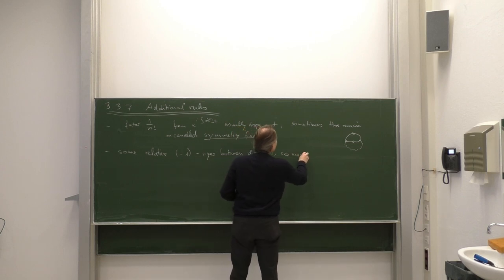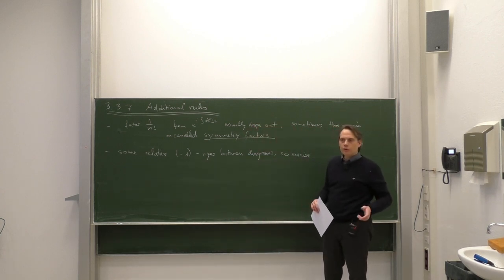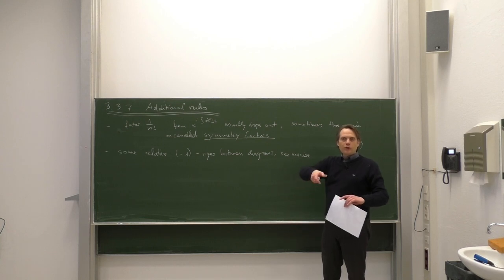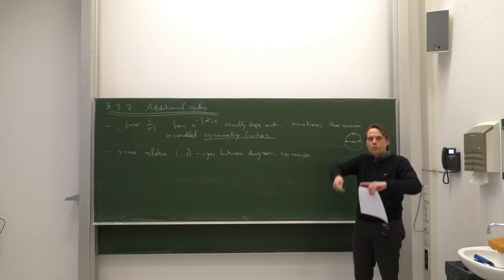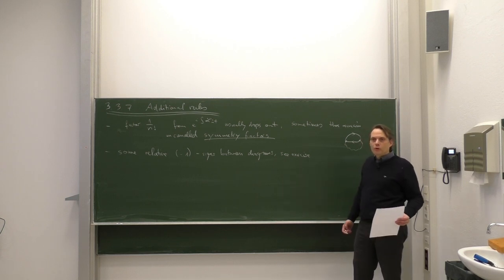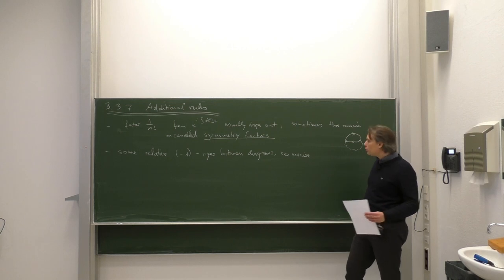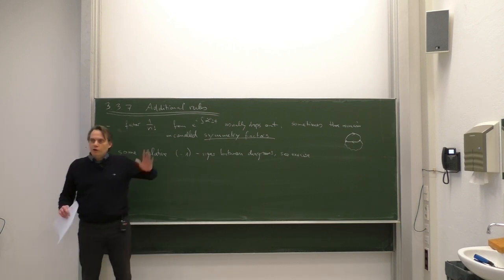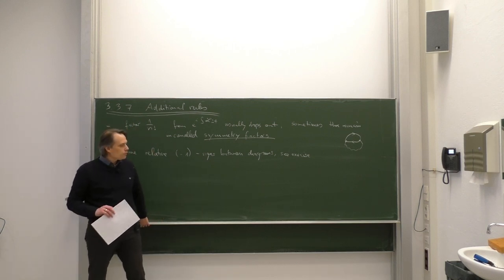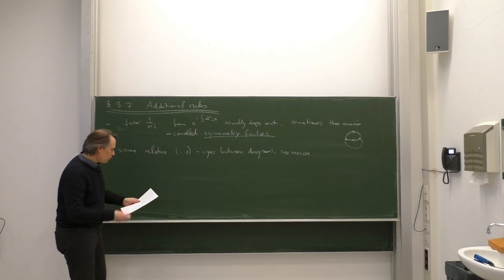Similarly, sometimes there are relative minus signs — see the exercise. The simple physical reason is Fermi statistics. If you have a diagram with two electrons in the final state, the state is antisymmetric under exchange of the two electrons. Therefore some Feynman diagrams corresponding to such an exchange must involve a relative minus sign. This automatically comes out from the contractions by evaluating the anticommutators appropriately. The contractions are always the basic tool to get the correct result.